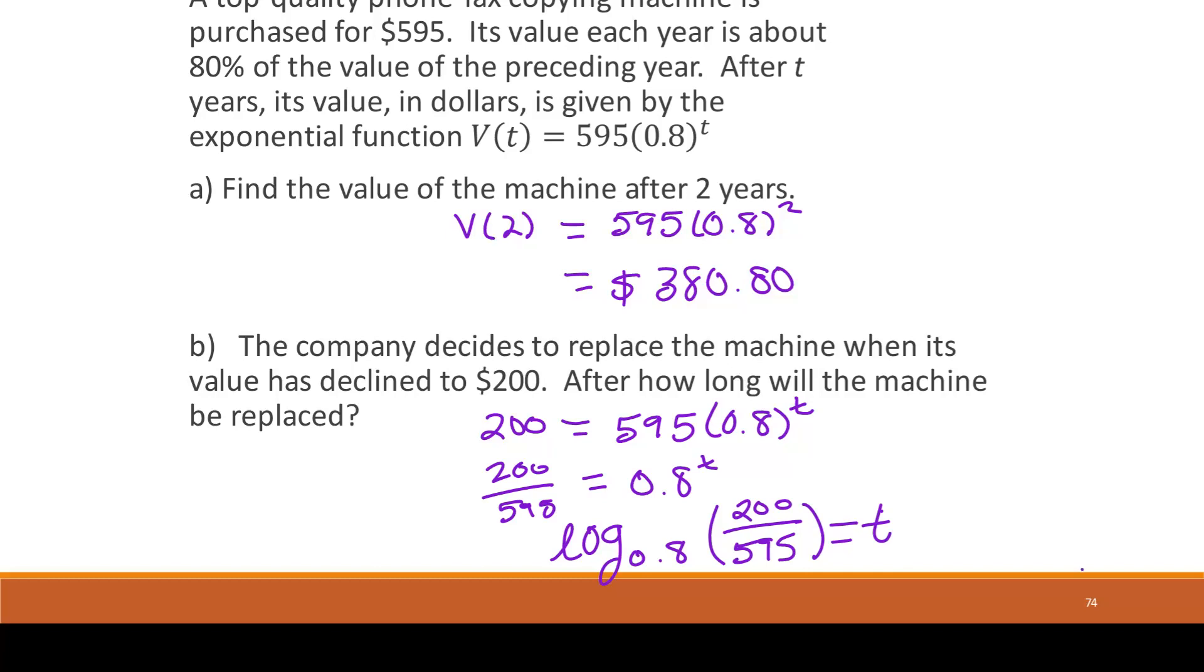And this one, you could do it like this if you have a graphing calculator. If you didn't, you could use the change base formula, which would mean you would first put in log of 200 over 595, all of that divided by log of 0.8. So for time here, you get approximately 4.89 years.